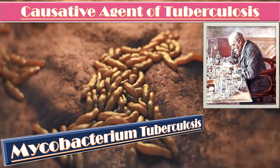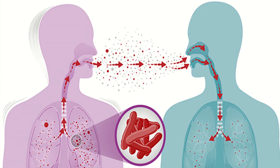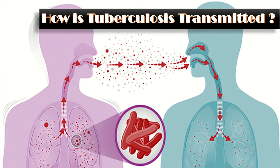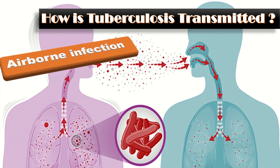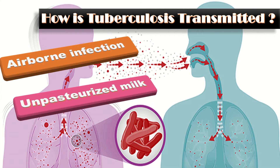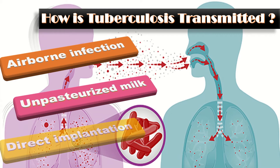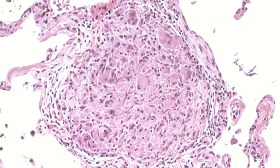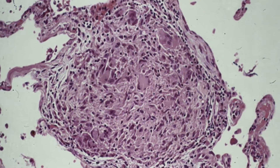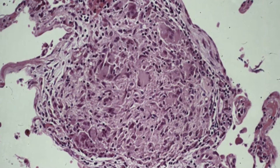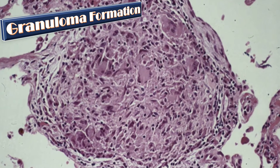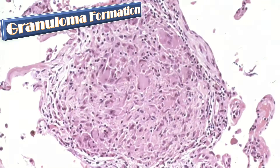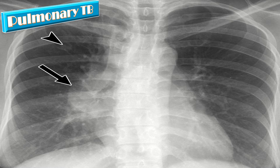Tuberculosis is primarily an airborne infection, but infection can also occur through ingestion of unpasteurized milk or direct implantation through abrasions in the skin or conjunctiva. The macrophages ingest and surround the bacilli, forming a barrier together described as a granuloma. Pulmonary disease is the most common form of clinical tuberculosis.